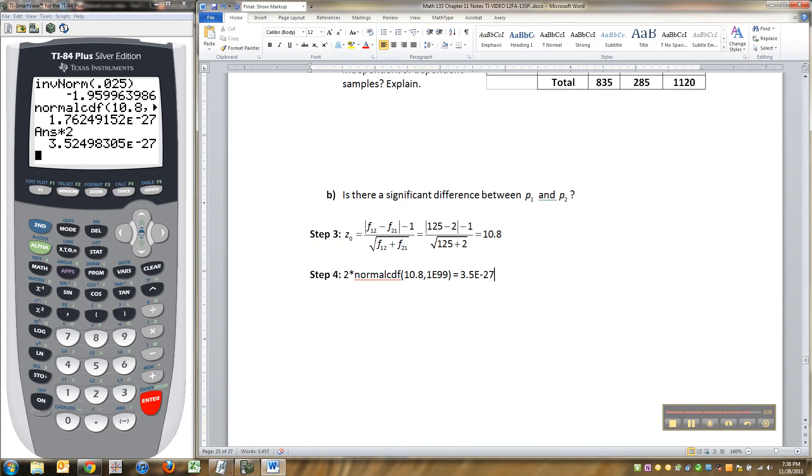That's 26 zeros, and then a 3. Really, really, really small, all right? So, we would reject, you know, the null hypothesis and all of that. But I just wanted to show you how to do this. Reject null because p, which is 3.5e negative 27, is definitely less than any alpha you were going to pick. All right, we're all done with chapter 11.